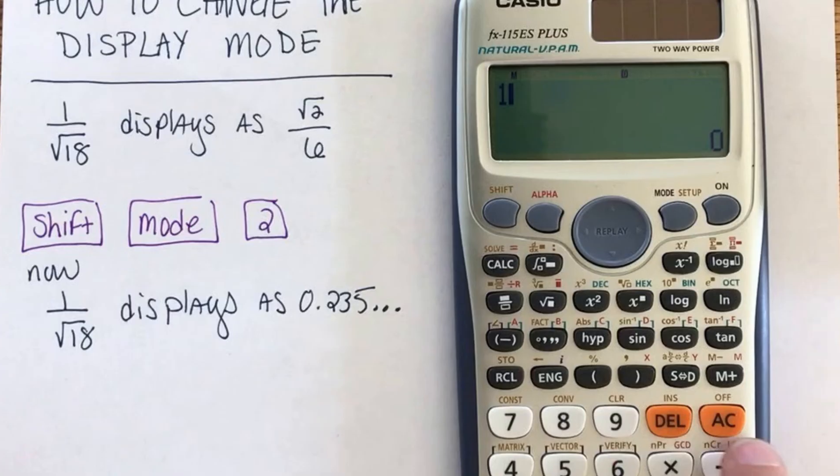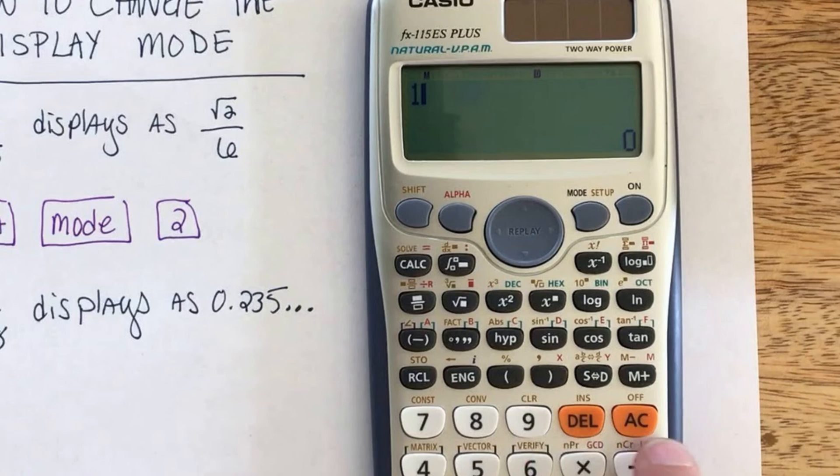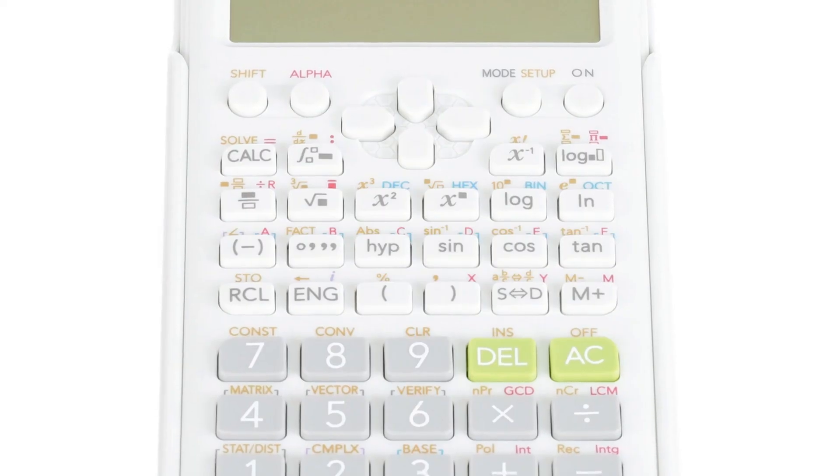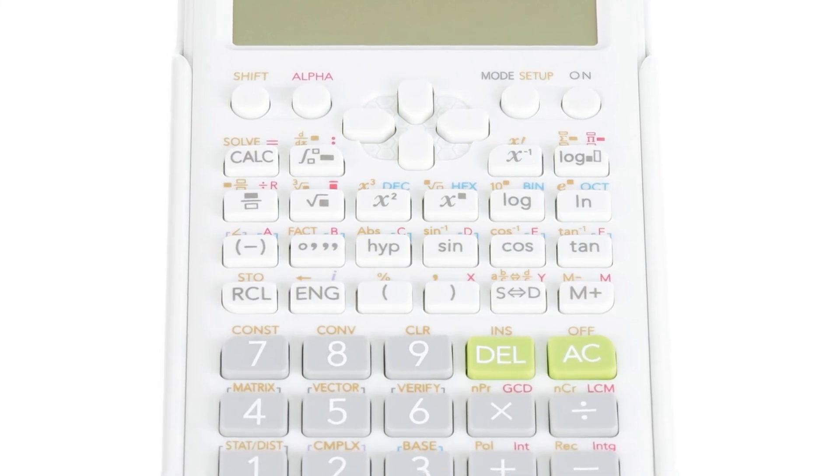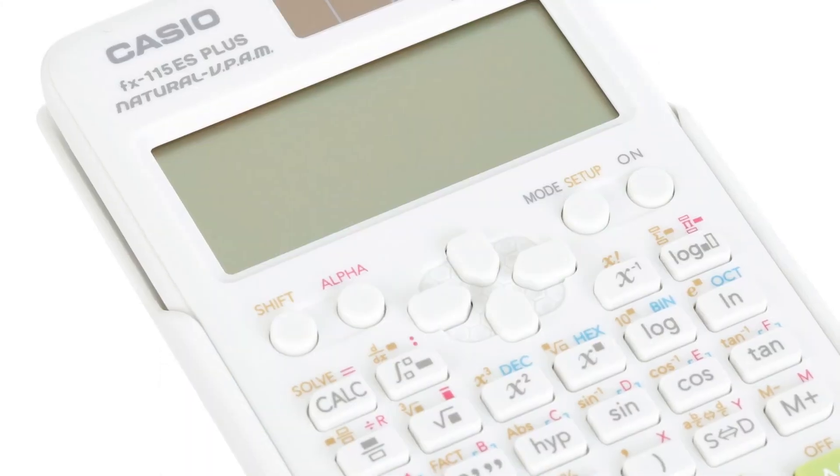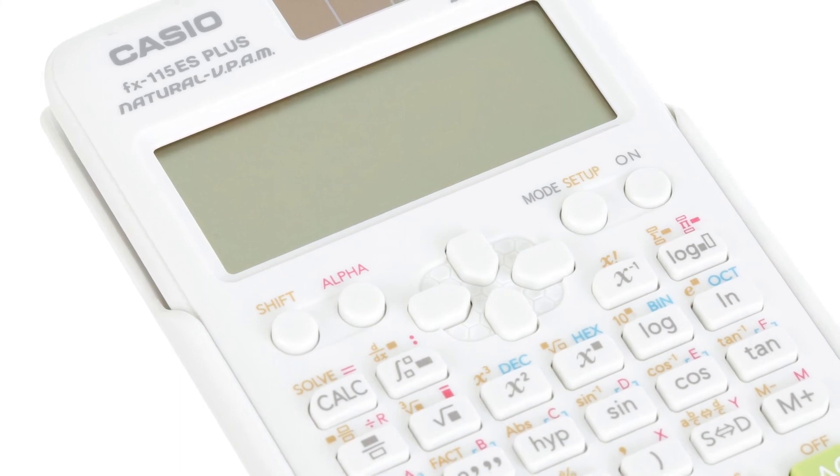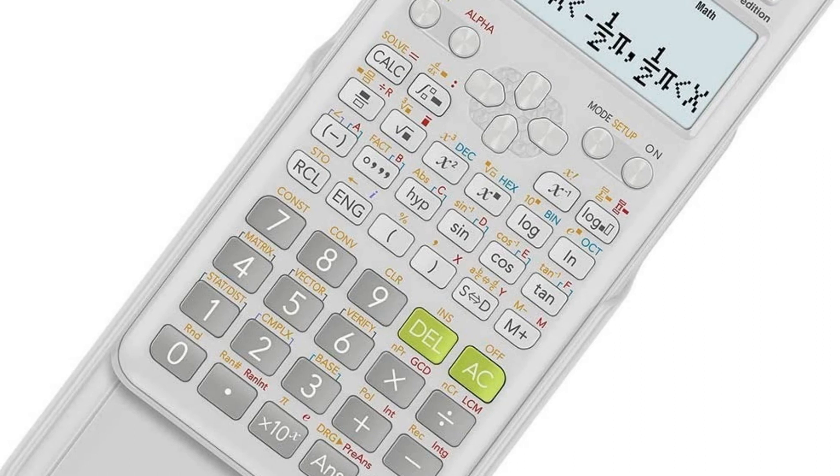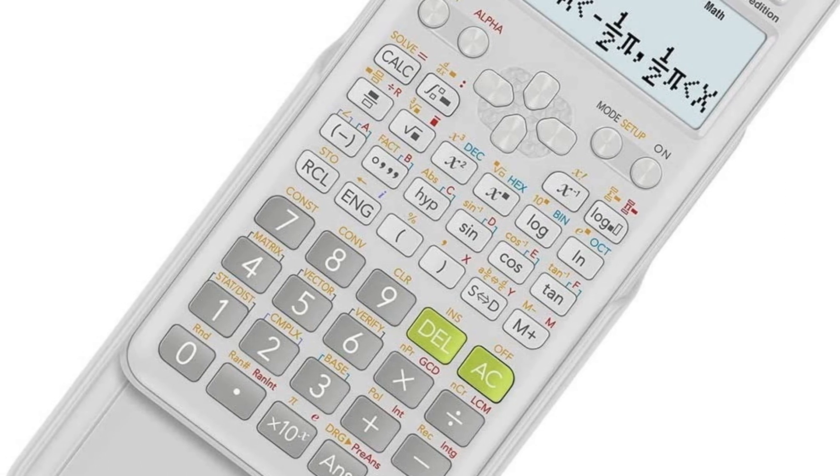Features 16-digit four-line LCD display. Natural textbook display shows expressions and results exactly as they appear in the textbook. Over 280 functions including fractions, statistics, complex number calculations, base arithmetic, linear regression, standard deviation, computer science, and polar rectangular conversions.